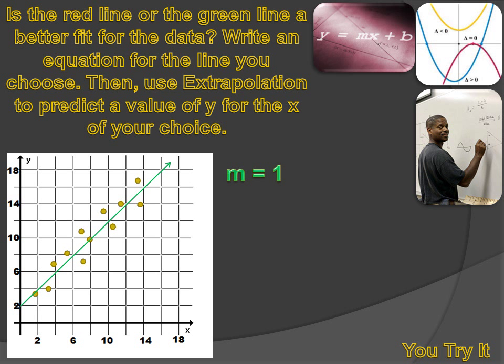Now, can we figure out the equation for this line? Well, we can. We can see that our slope is one. A rise of one results in a run of one. So our slope is one over one, or one. And b, our y-intercept is two. So our equation is y equals x plus two.